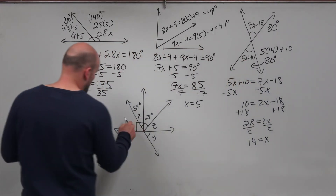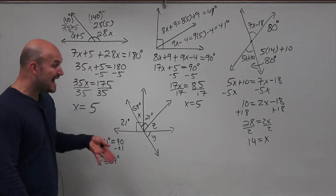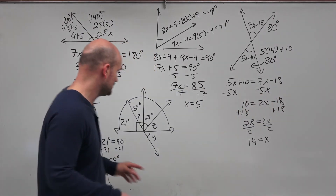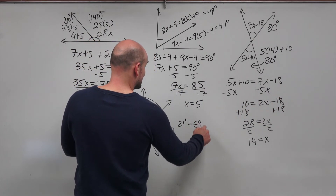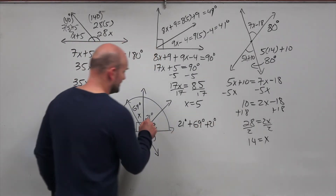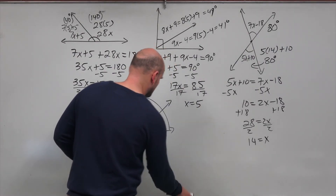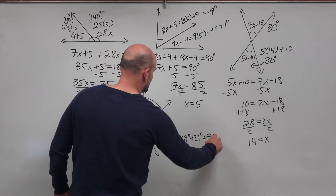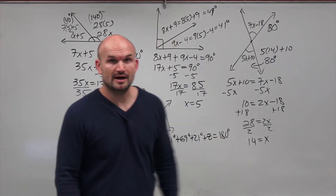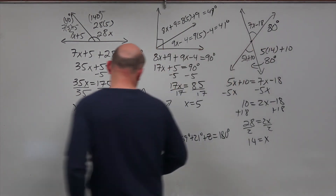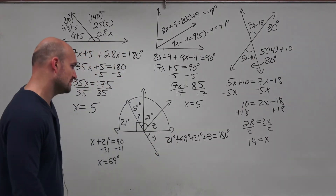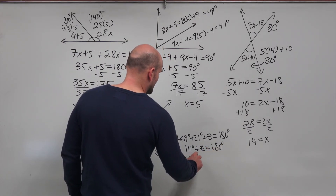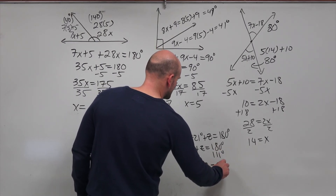Now looking at the straight line, all the angles along it add up to 180 degrees. So: 21 + 69 + 21 + z = 180 degrees. Combining: 111 + z = 180 degrees. Subtracting 111 gives z = 69 degrees.